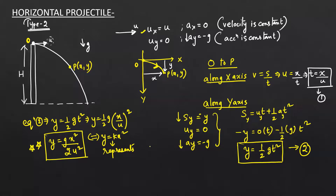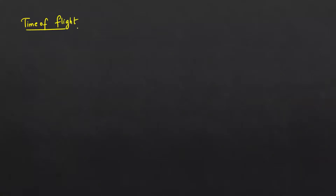This is Equation 2: y = gx²/(2u²). Now let us find the time of flight of the horizontal projectile. Using y = ½gt², the time of flight is the total time taken for the entire journey. For the complete journey, the displacement along the y-axis is h.